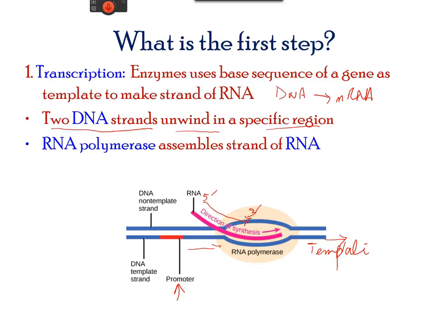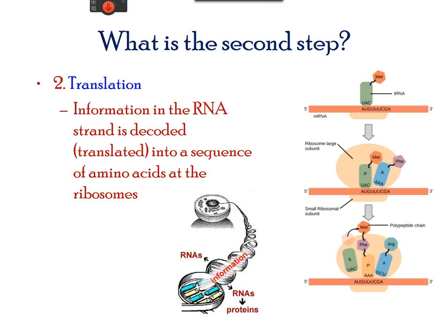Once the mRNA is transcribed, it is now ready to make multiple copies of the protein through a process called translation. The newly synthesized mRNA leaves the nucleus and moves towards the ribosome where it will be translated into a protein. In eukaryotic cells, there is some RNA processing, which we will discuss in upcoming slides. Translation requires an mRNA template, ribosomes, tRNAs, and various other enzymes.